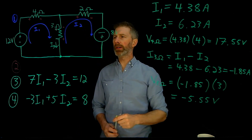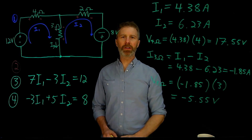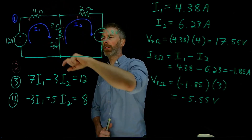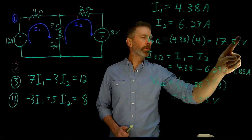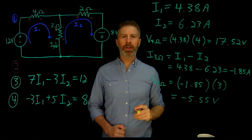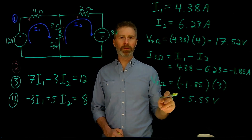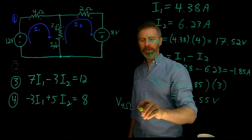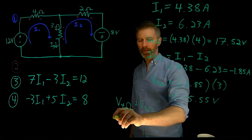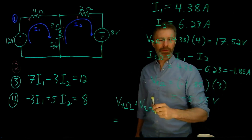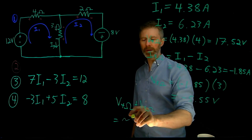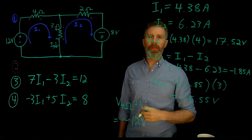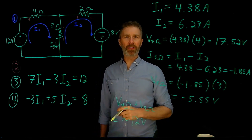To confirm the calculations, Kirchhoff's voltage law says the voltage across the 4 ohm resistor plus the voltage across the 3 ohm resistor should add up to 12 volts. That's 17.52 plus negative 5.55, which works out to about 12 volts — exactly what the voltage source is. There's a little rounding error, but this confirms that the arithmetic and the circuit setup are correct.